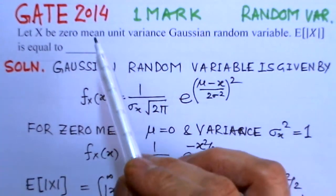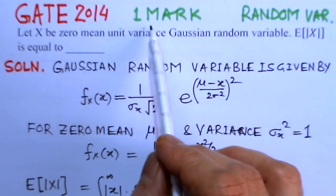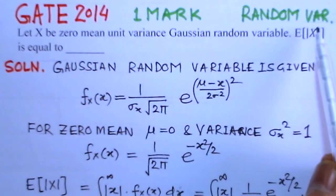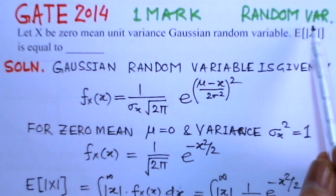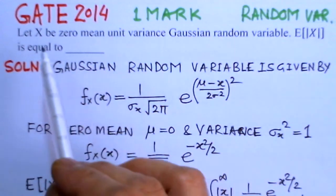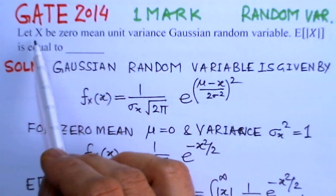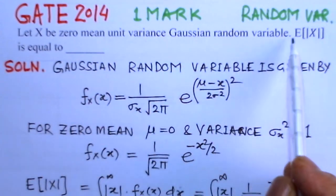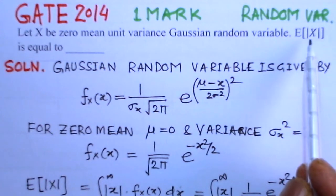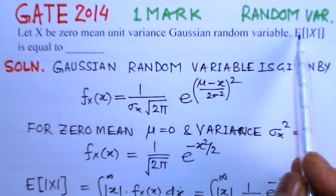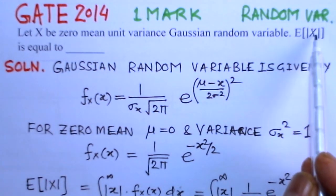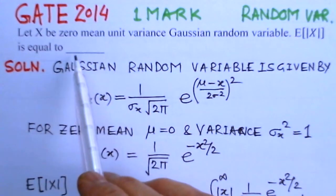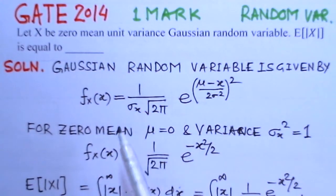Present problem is of GATE 2014 and it is of one mark and it is on random variable. Let us read out the problem. Let X be zero mean unit variance Gaussian random variable. Then we have to find the expected value of modulus of X. That value is to be evaluated.